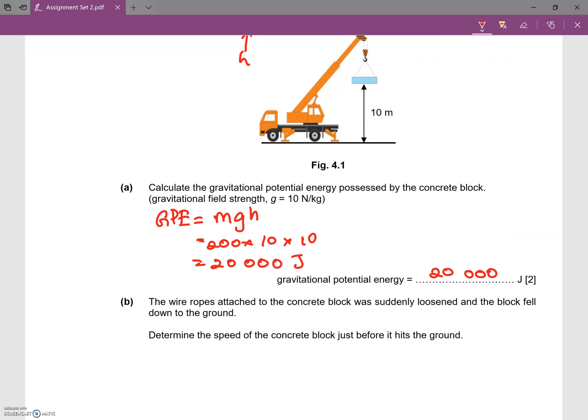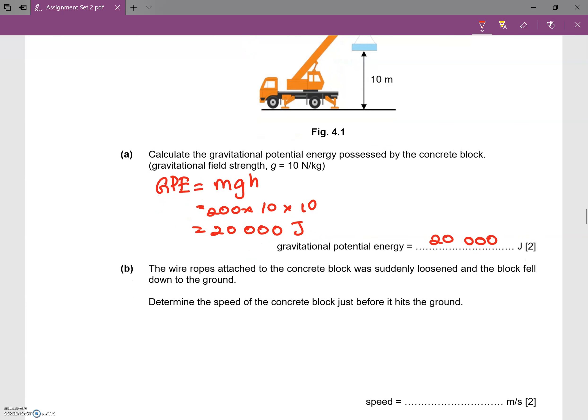We can actually find the maximum speed by knowing that the energy being converted is GPE converted to KE. Because as it drops down, the GPE is being lost. As it gets lower and lower, as more and more GPE is lost, the KE will actually increase.